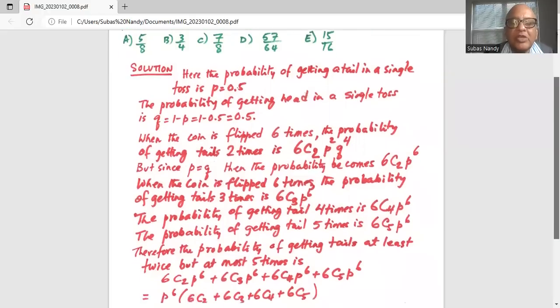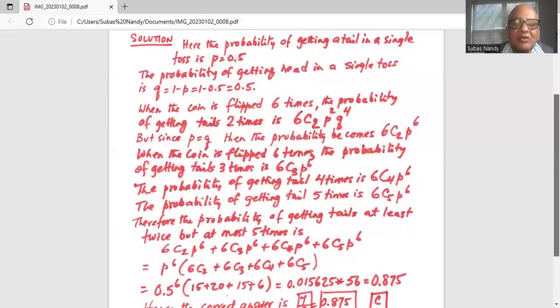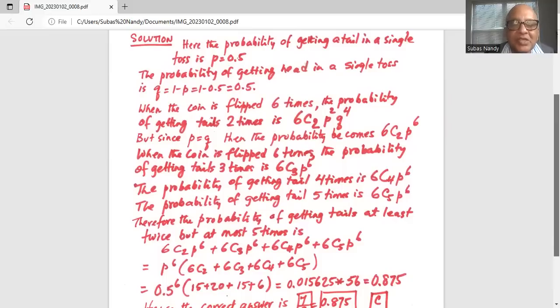Therefore, the probability of getting a tail at least two times, minimum is two and maximum is five, is you've got to add all these probabilities: 6C2 P^6 plus 6C3 P^6 plus 6C4 P^6 plus 6C5 P^6. So you can take out the common factor P^6 outside the parenthesis. It's 6C2 plus 6C3 plus 6C4 plus 6C5.